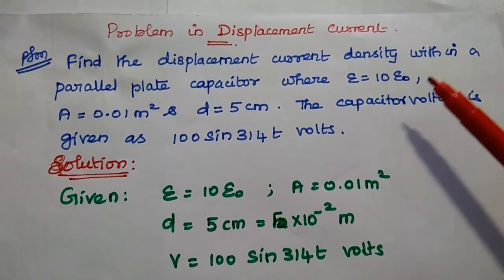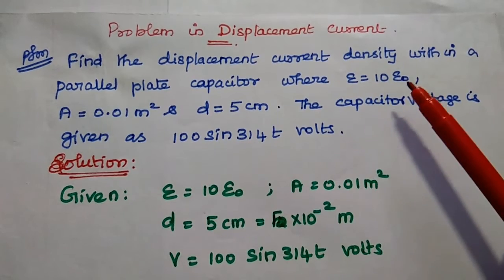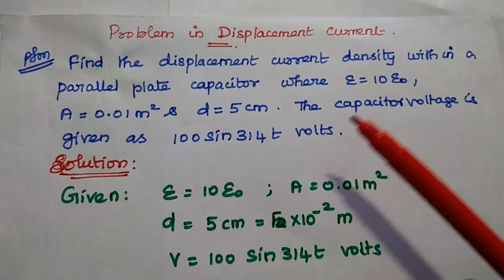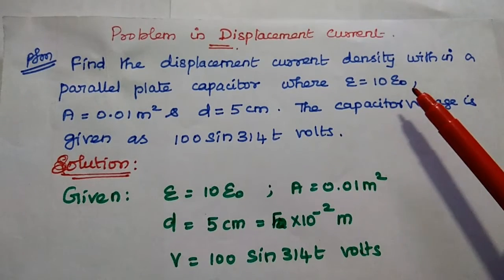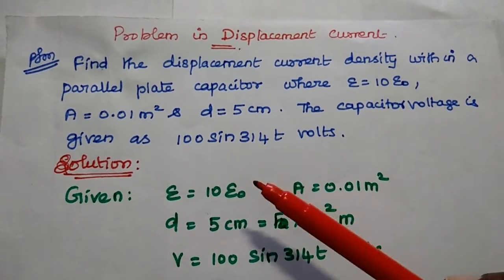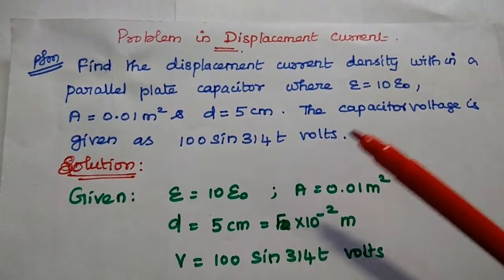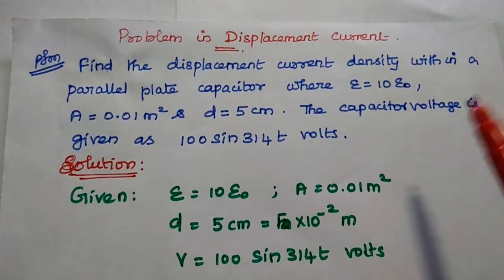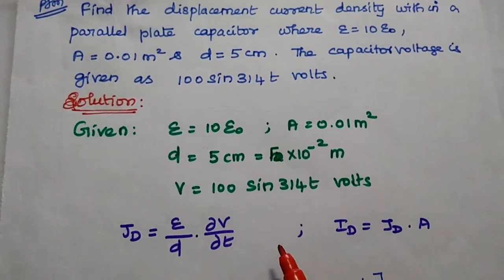Let's solve one important problem in displacement current density. Find the displacement current density within a parallel plate capacitor where epsilon equals 10 times epsilon naught, A equals 0.01 meter squared, and D equals 5 centimeters. The capacitor voltage is given as 100 sin 314T volts.